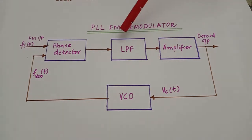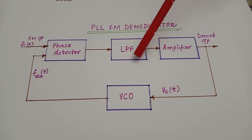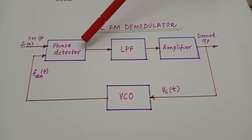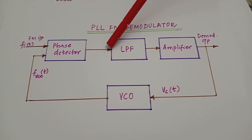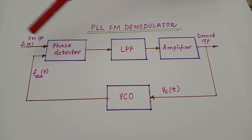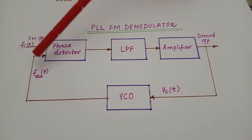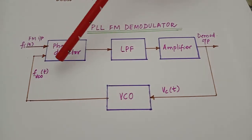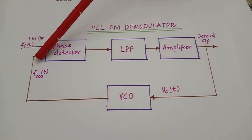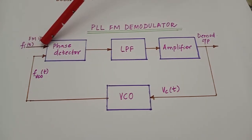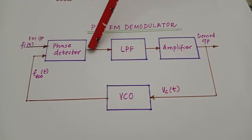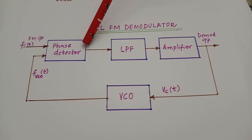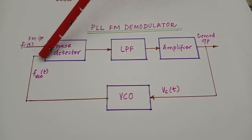Before we go into the working of a PLL FM demodulator, let us see the functions of these three major blocks. The phase detector produces a DC output voltage which is proportional to the phase difference between the input signal having frequency F_in and the feedback signal having frequency F_out. Depending upon the phase difference between the two input frequencies, the phase detector produces a DC output voltage.